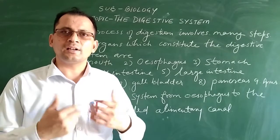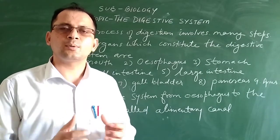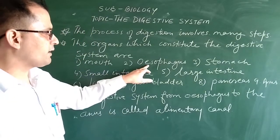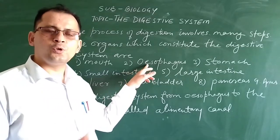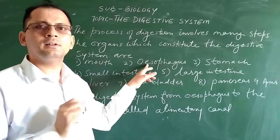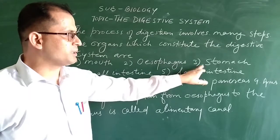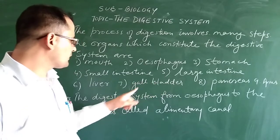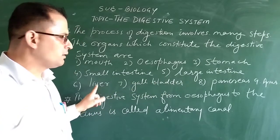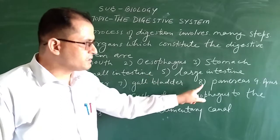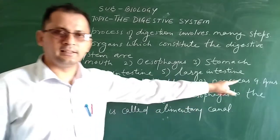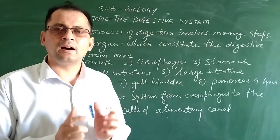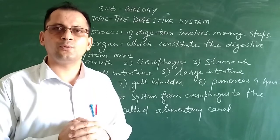Now, what are the different organs involved in the process of digestion? These are: mouth, esophagus (also known as the food pipe, which carries food from the mouth to the stomach), stomach, small intestine, large intestine, liver, gallbladder, pancreas, and anus. These are the organs which play a major role in the digestion of food in our body.